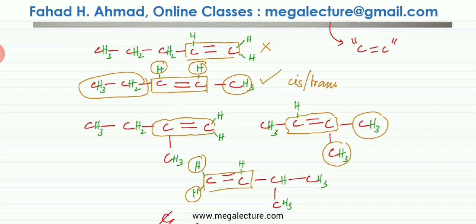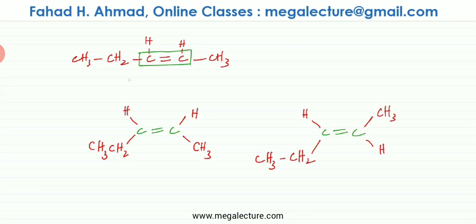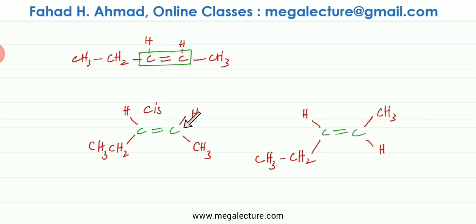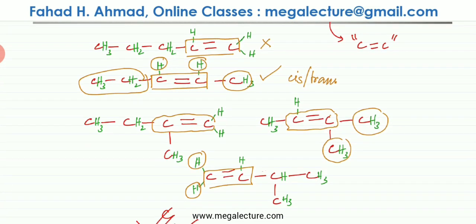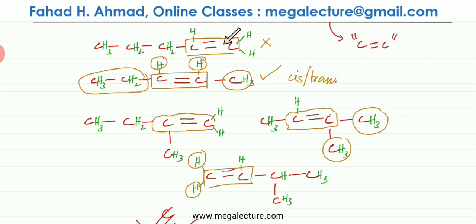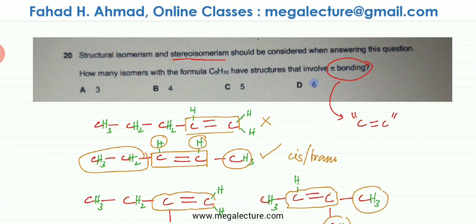Only the second straight-chain molecule forms cis-trans isomers. With the double bond, the carbon is trigonal planar with a 120-degree fan-shaped arrangement. In the cis version, the two hydrogens point in the same direction; in the trans version, one hydrogen switches to point the other way and the CH3 group points upward. Counting all isomers: one, then the cis and trans of the second isomer count as two, plus three branched isomers — totaling six isomers. The correct answer is six.